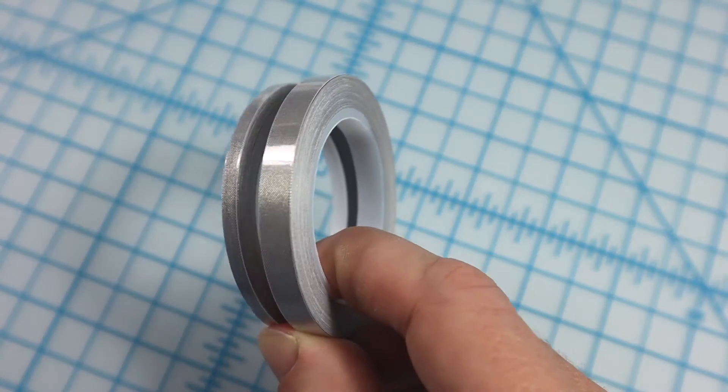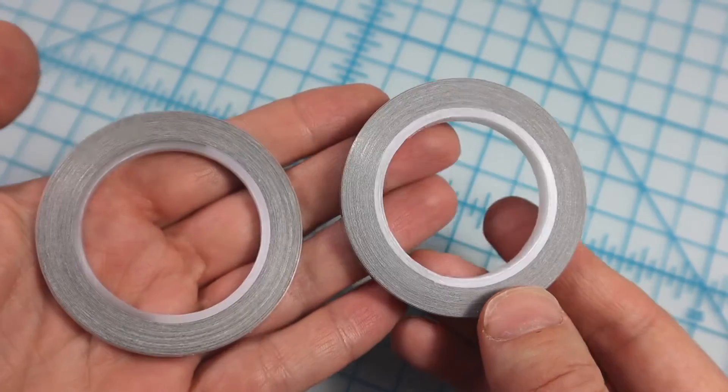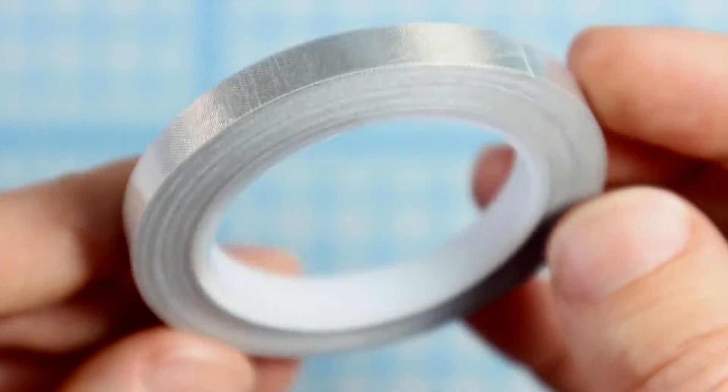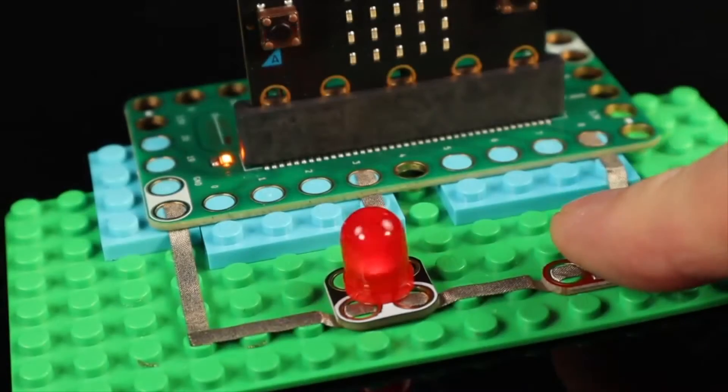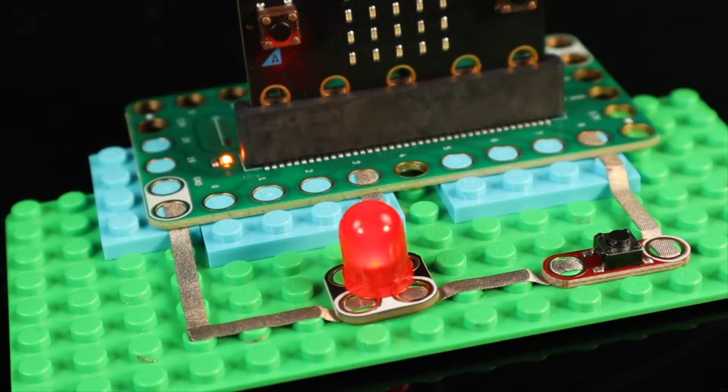It comes in two sizes, quarter-inch and eighth-inch. We use quarter-inch tape for wearables because components like LEDs are easier to attach with wider tape. The eighth-inch tape is great for working in brick-based environments.